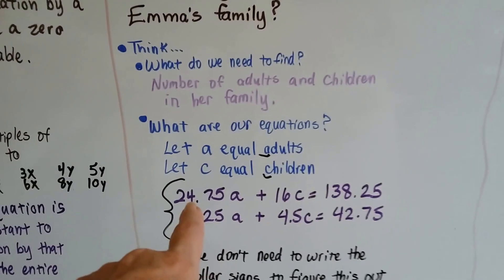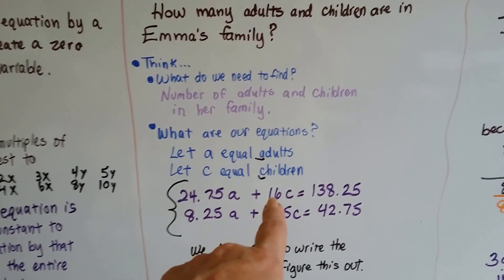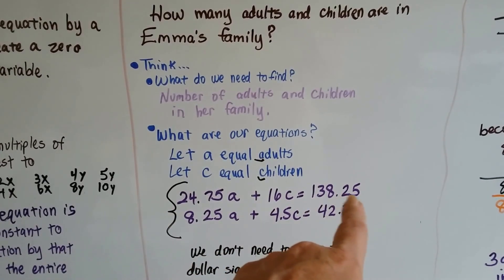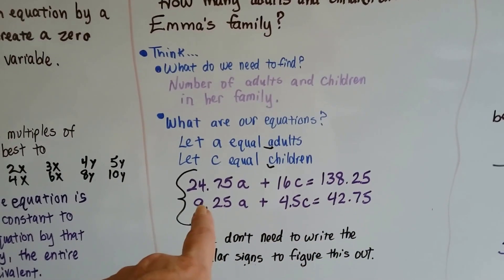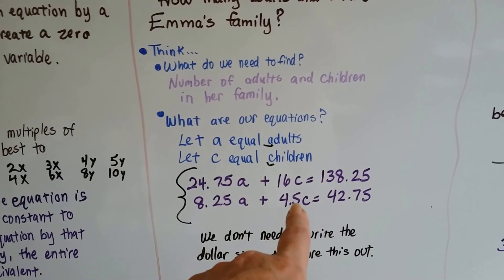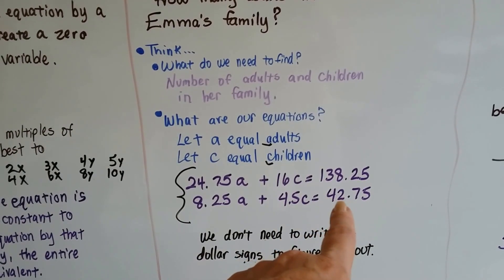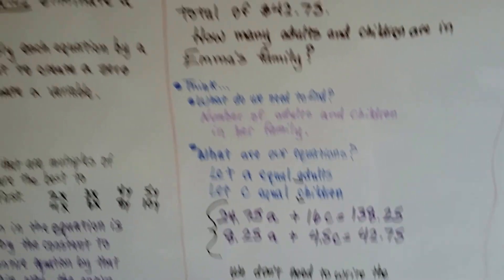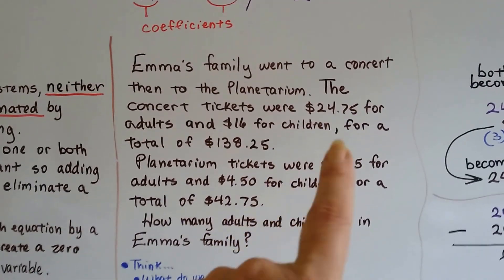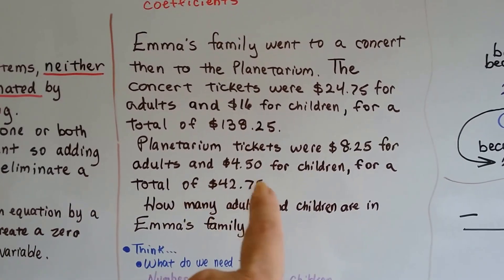We've got $24.75A plus $16C equals $138.25. Then we've got $8.25A plus $4.50C equals $42.75. All we did was take the numbers out of the problem and put an A or a C after them, and we knew the totals were the equals.